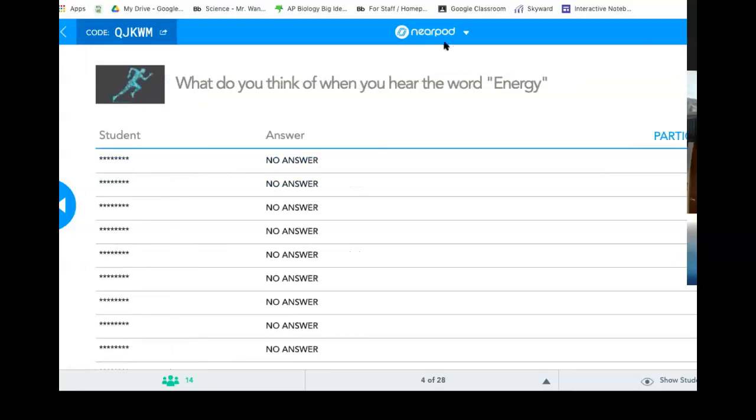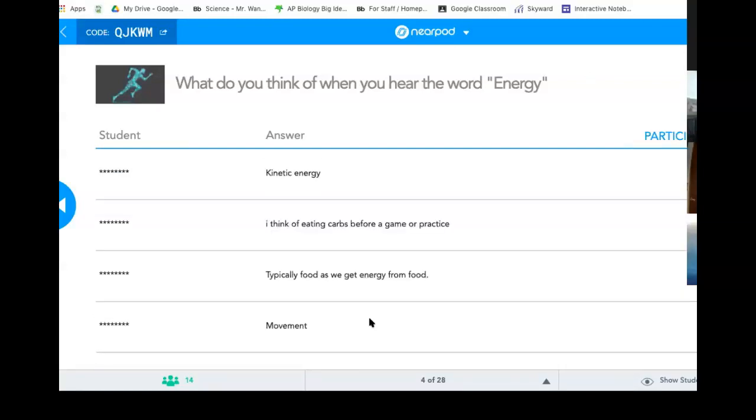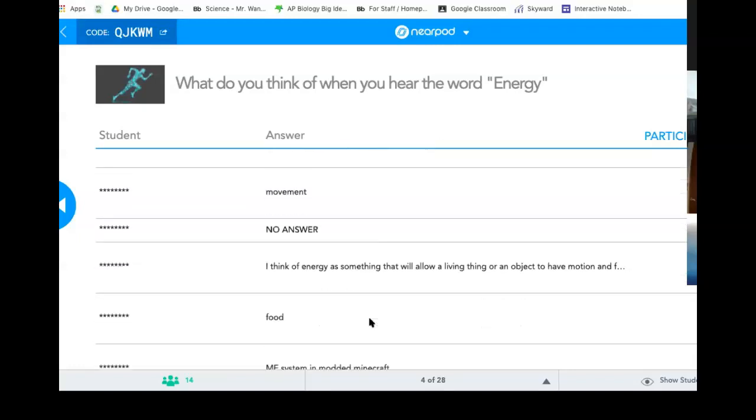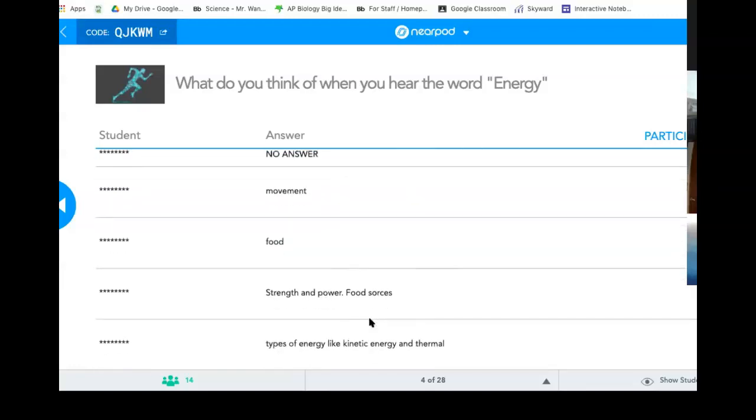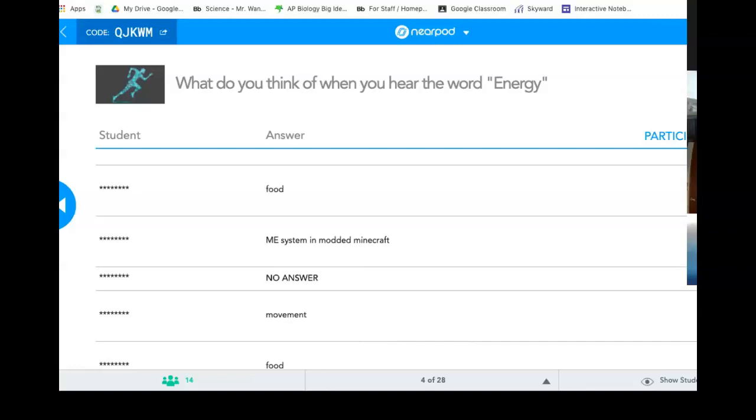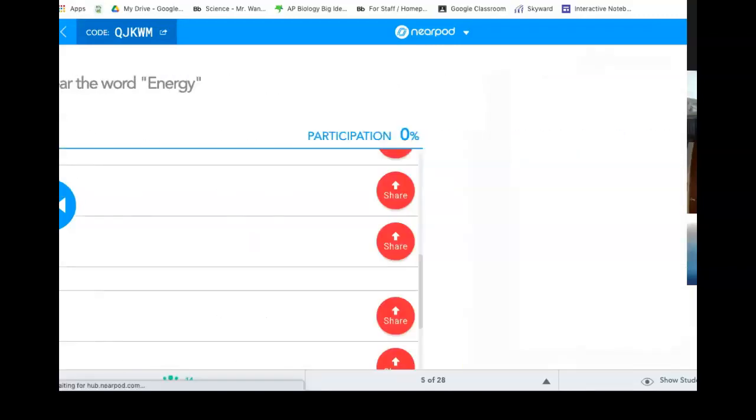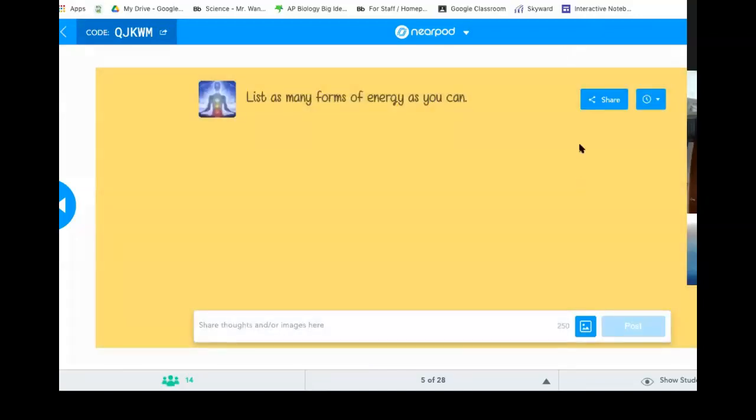So here's your first question. You're going to kind of lead me through this lesson today. Okay, what do you think of when you hear the word energy? What do you think of when you hear the word energy? Movement, food, eating carbs, kinetic energy. A few of the movements, a few for food. Food and movement, most common. Strength and power, types of energy like kinetic and thermal. So somebody is ready for our next question, really. Okay. So again, we're surfacing schema, right? So that's what you'd think of when you hear the word energy.